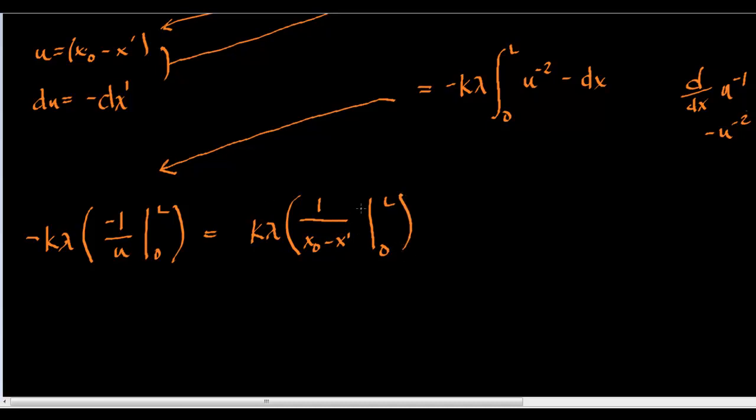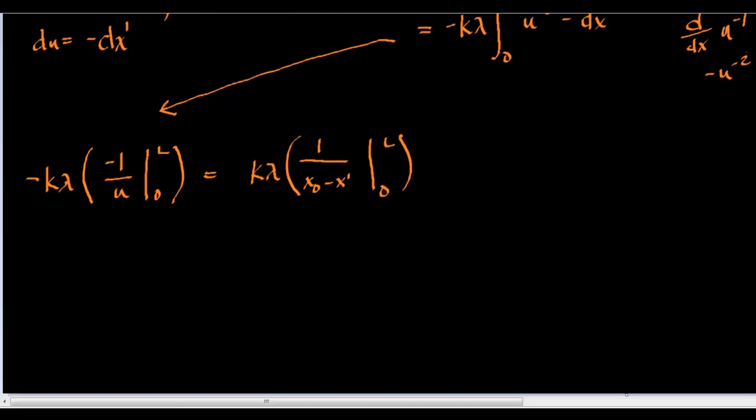And, maybe I don't want to have parentheses on there, but we'll just leave it. So, now, we want to plug in l and then subtract 0. So remember, we're plugging in to x prime. x naught is a constant. x prime is what's moving around. So, we're going to get k lambda times 1 over x naught minus l minus 1 over x naught.